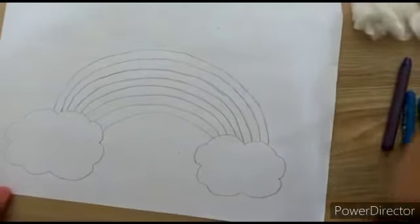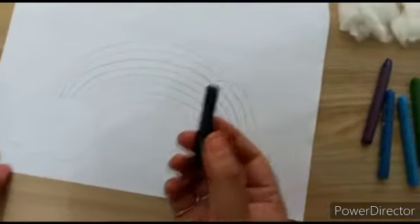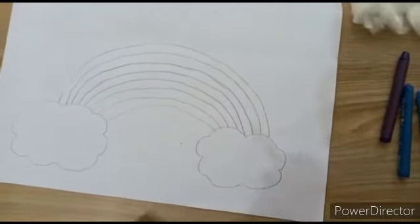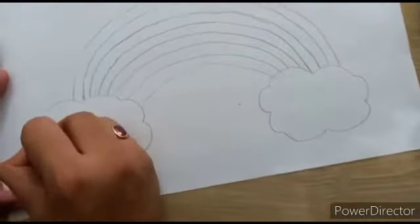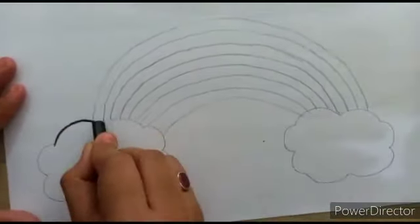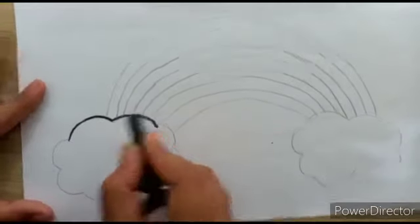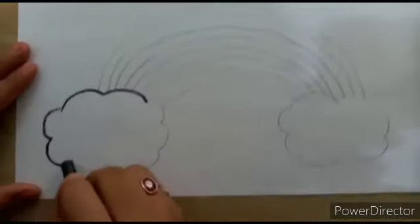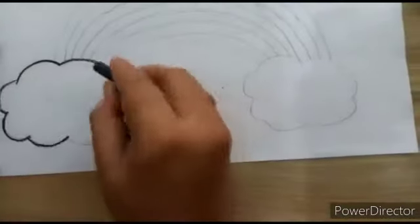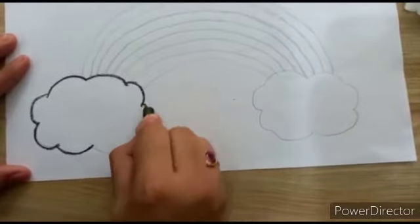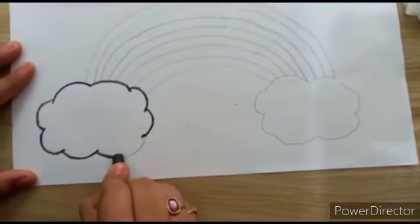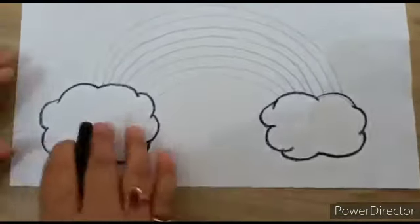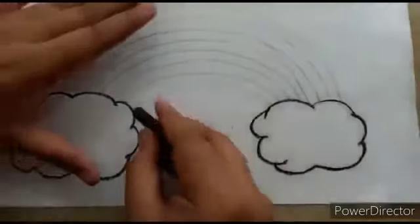So here we have drawn the clouds. Now with the help of the black crayon — you can use a sketch pen also — we will make the border. First we trace the C curve outline we drew in pencil. Here I have done both the clouds with the black border. Now we will make the rainbow strips.